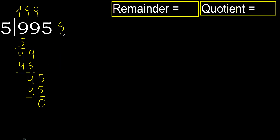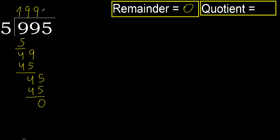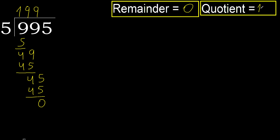Next — that is not a number, therefore finish it. 995 divided by 5 is 199.